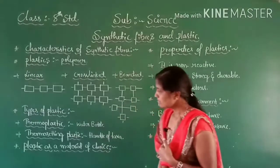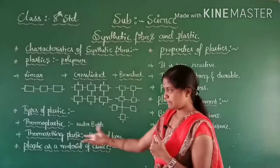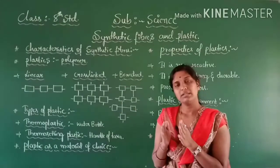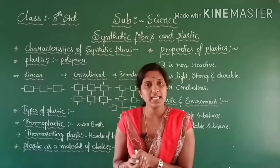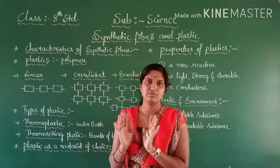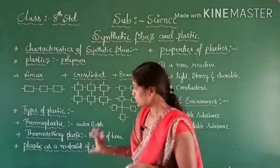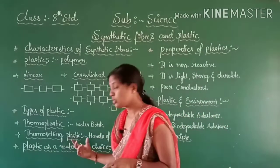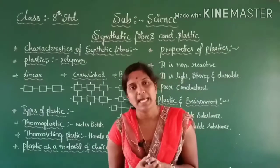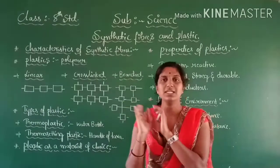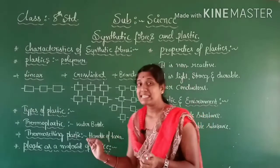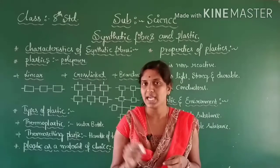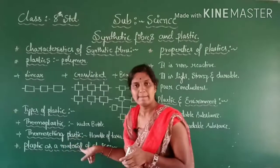The next type is thermosetting plastic. Thermosetting plastic is the plastic which is not possible to change its shape once it is formed. Even under the influence of heat energy, this type of plastic cannot change its shape. That is what we call thermosetting plastic.